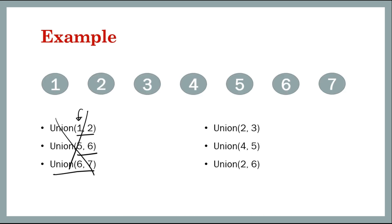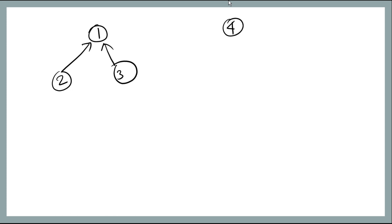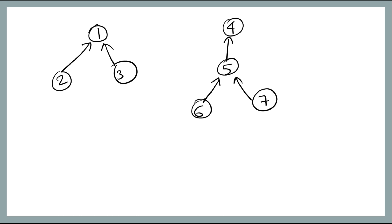Next is union(6, 7). Five is the parent of six, and now seven is attached — we can make six the parent of seven, or five the parent of seven. Either way, five, six, and seven are now in one set. Redrawing: 1 is parent of 2; 3 and 4 are standalone; 5 is parent of 6 and 7. We now have four sets. Next, union(2, 3) — attach 3 as a child under the parent of 2.